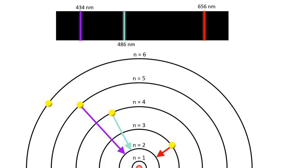And finally, a jump from the sixth orbit to the second orbit emits violet light at a wavelength of 410 nanometers. Notice that as the energy of the transition increases, the wavelength of the emitted light decreases.